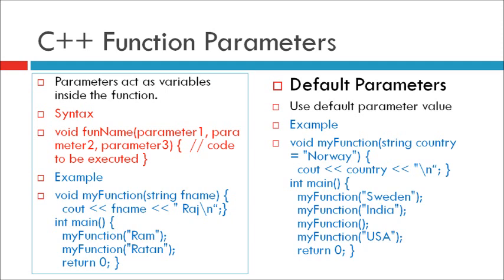void MyFunction string fname, cout fname followed by Raj. In integer main, MyFunction in bracket Ram, MyFunction in bracket Ratan, return 0.